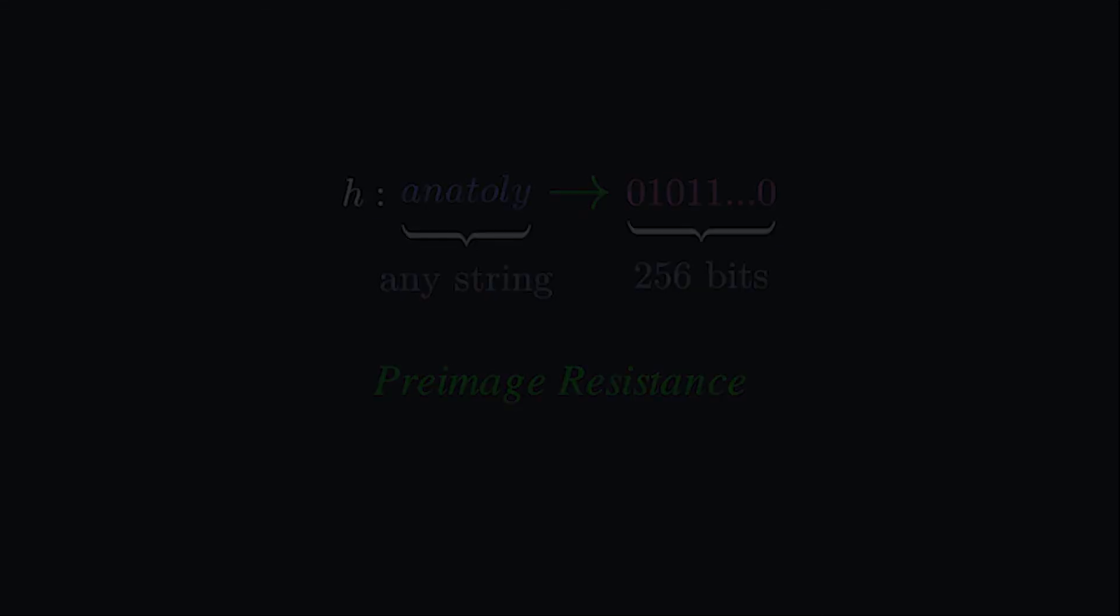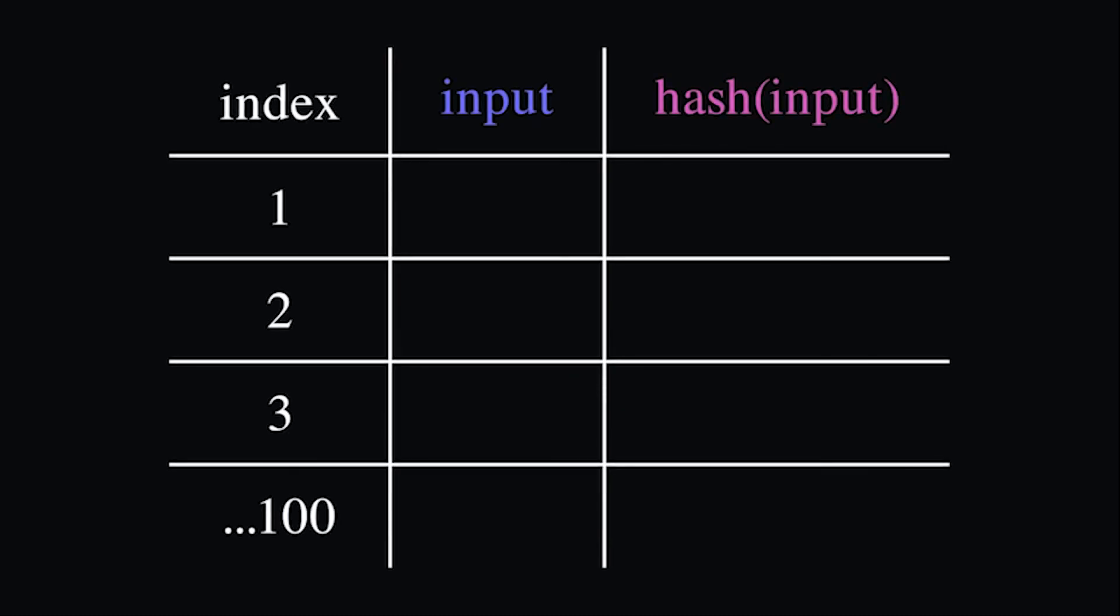In proof of history, validators prove time is passing by creating a table of these hashes. We start with any seed, like Anatoly, and compute the hash, hash 1. Then we apply the hash function to hash 1 to get hash 2, and so on.